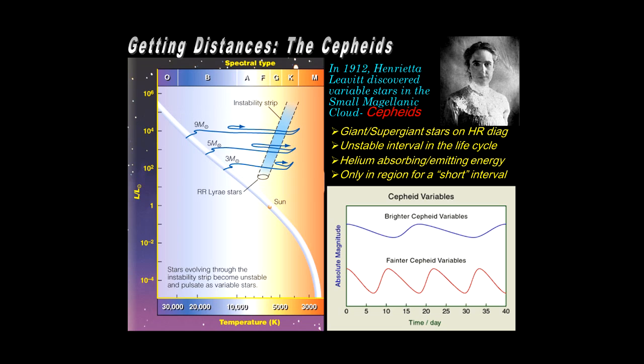...they manifest the period-luminosity relationship, which is that large or bright Cepheids have a very long period, and the fainter Cepheids, the dimmer Cepheids, have a faster period. They're also smaller, physically smaller. So this period-luminosity relationship has been then and now instrumental in discovering distant scales in the galaxy, and in particular, the globular clusters, as we'll now see.